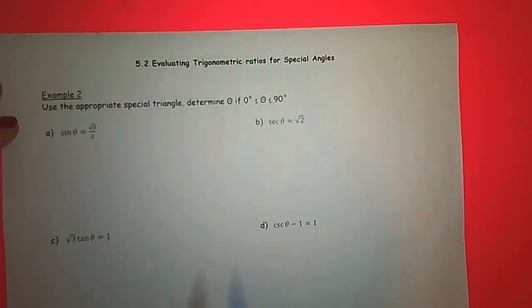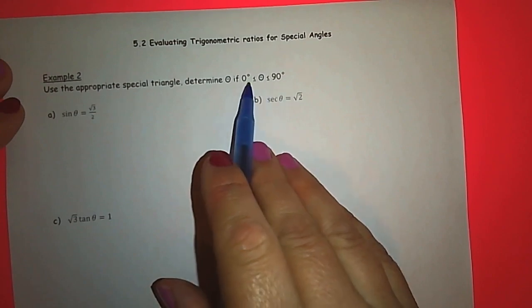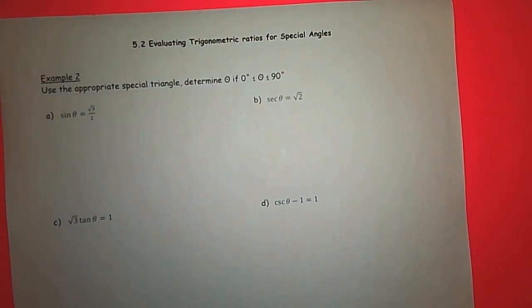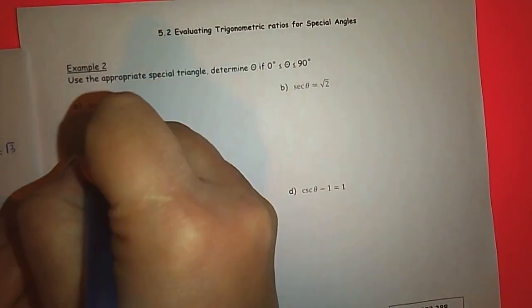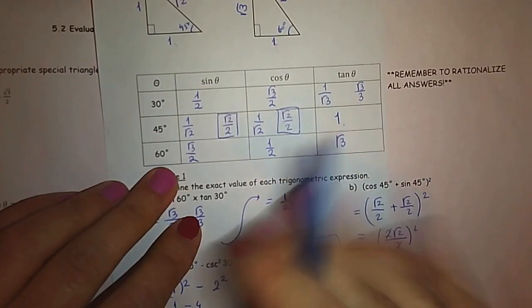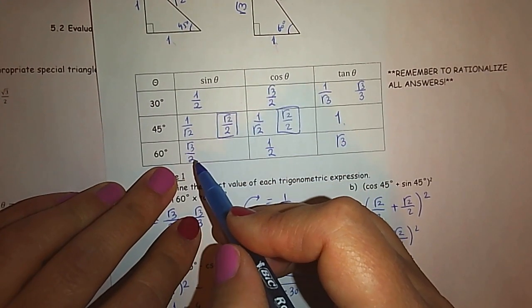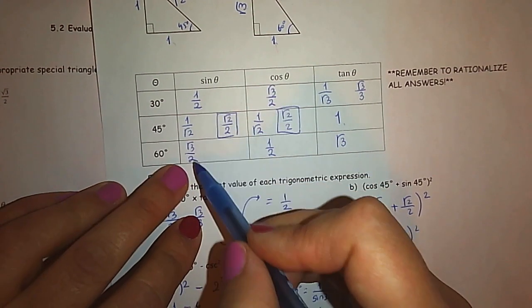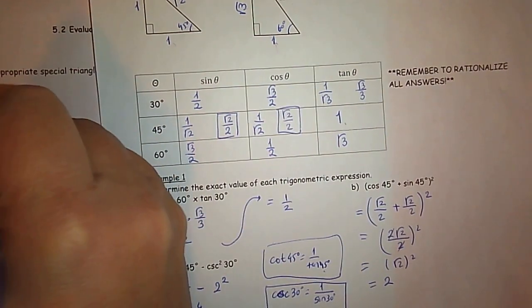Let's look at example two. Use the appropriate special triangle to determine theta, where theta is greater than or equal to 0 degree and less than or equal to 90 degree. If sine theta equals root 3 over 2, what is theta? We can check the table: sine 30 is one over two, sine 45 is one over root 2, and sine 60 is root 3 over 2. So if sine theta equals root 3 over 2, then theta must be 60 degree.